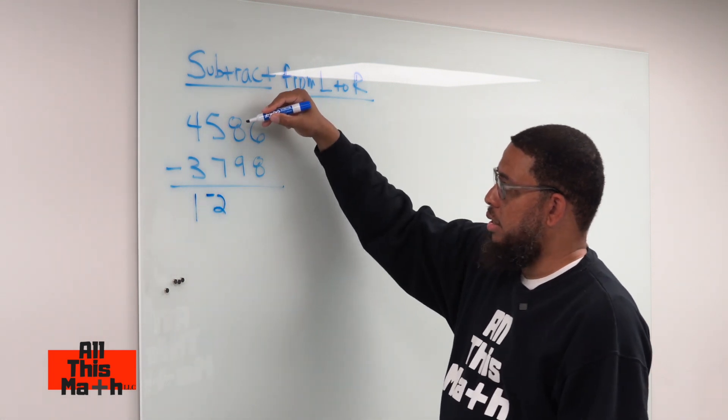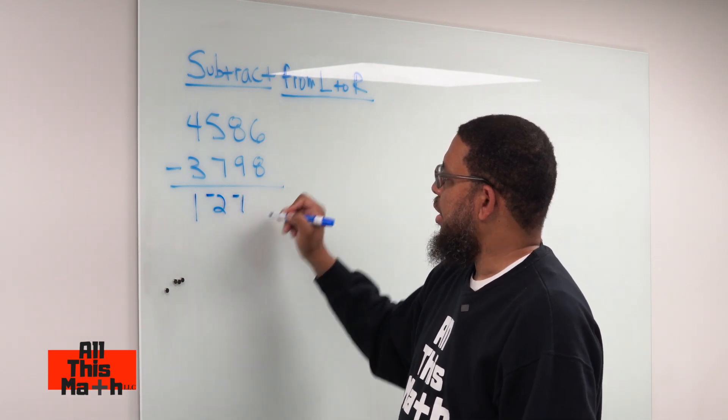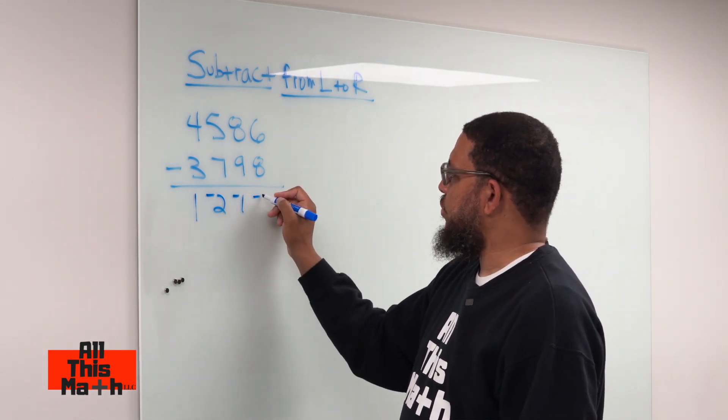And then we do 80 minus 90, or 8 minus 9, which is going to be negative 1. Then we're going to do 6 minus 8, which gives us negative 2.